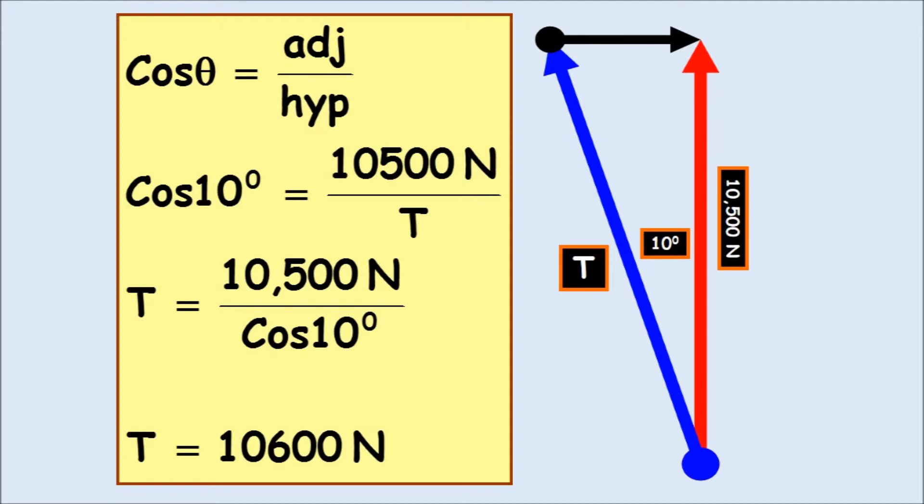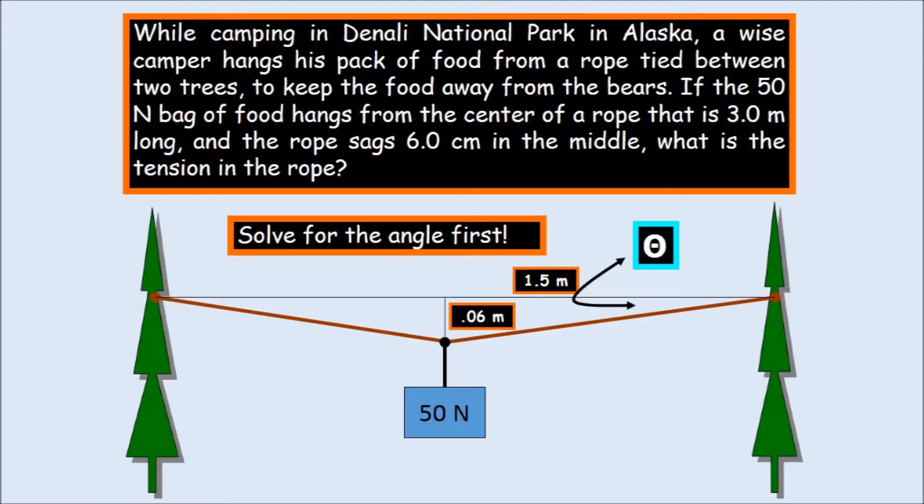So the first thing you have to do while camping in the Denali National Park in Alaska, a wise camper hangs his pack of food from the rope tied between two trees to keep the food away from the bears. If the 50 Newton bag of food hangs from the center of the rope that is three meters long and the rope sags four centimeters in the middle, what is the tension in the rope?